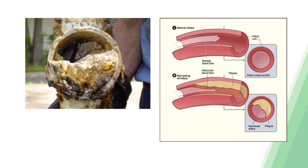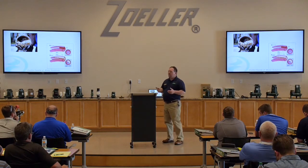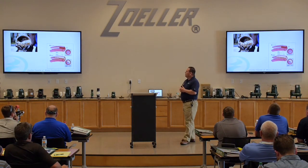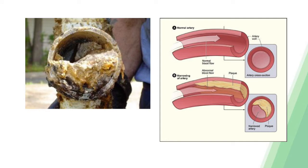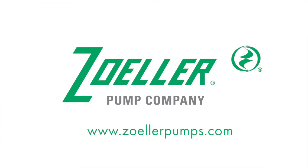Here we were talking about the scouring velocity, and if we don't maintain scouring velocity, this is an example of what can happen. We have an example up there — basically it's an artery. You get the same kind of buildup, like plaque in your arteries. The same thing can happen in a piping system. If we're not maintaining scouring velocity, this same sort of thing can happen. Over time, that pipe becomes smaller and smaller and smaller, and eventually it plugs up to the point where you can no longer pump through it. So this is a real world example of that.